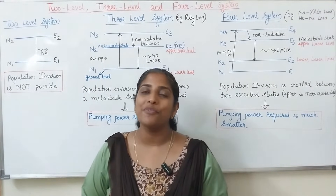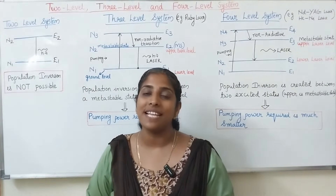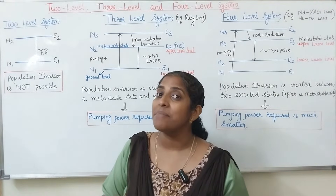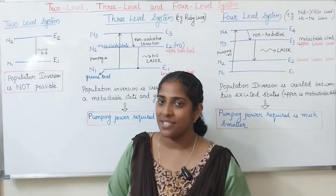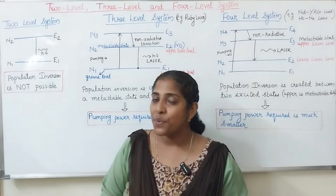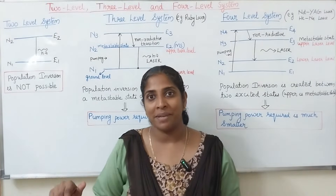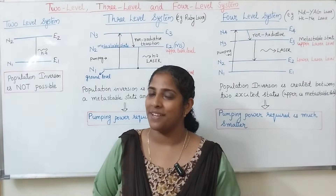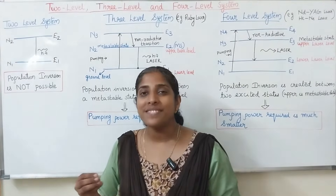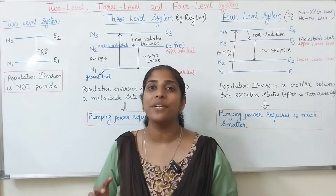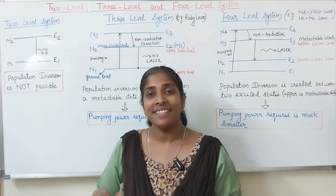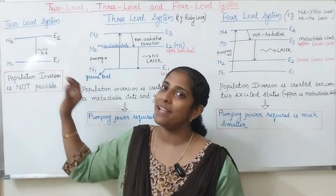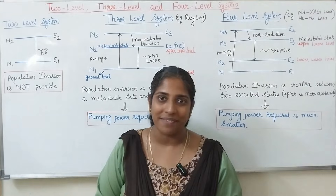One problem with the 2 level laser system is that it does not have a metastable state. If a system does not have a metastable state, population inversion is not possible. So the 2 level system is not suitable for practical lasers, because population inversion is not possible in a 2 level system.